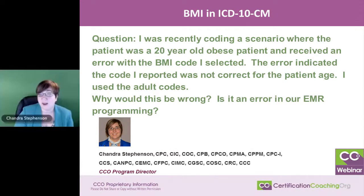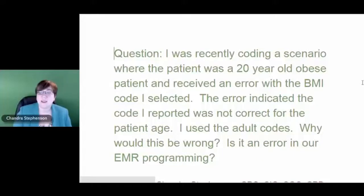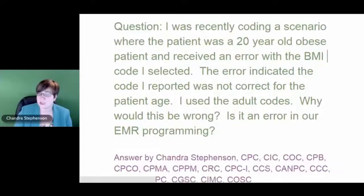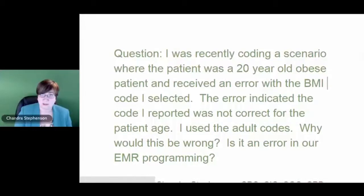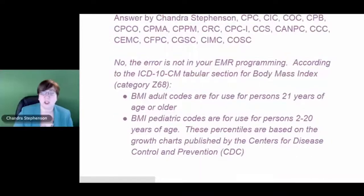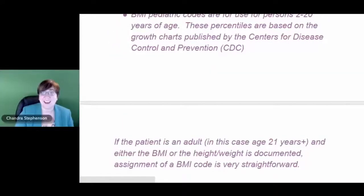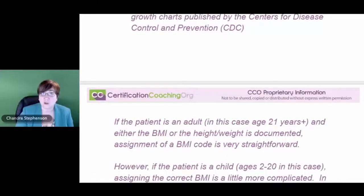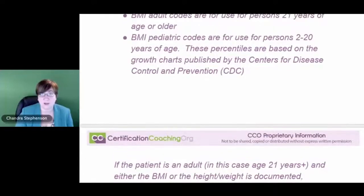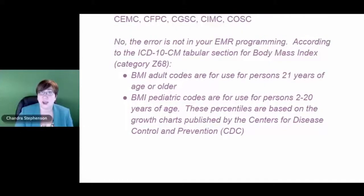This is a question that a number of people run into pretty frequently in ICD-10. The reason the person probably received this error had nothing to do with the programming in the claim scrubbing or the electronic medical record. What you actually find in ICD-10 is that for body mass index, a patient is not considered an adult until the age of 21. They have to be 21 or older to be considered an adult in ICD-10-CM for body mass index.